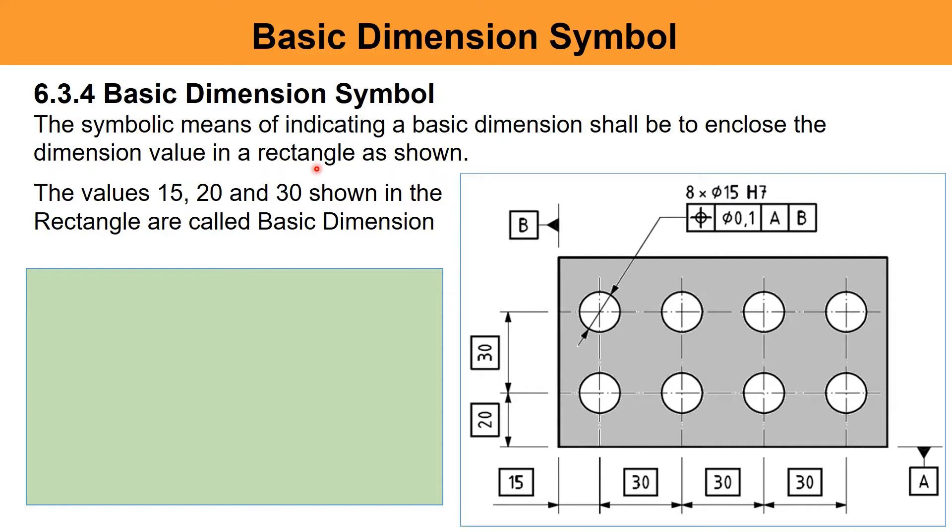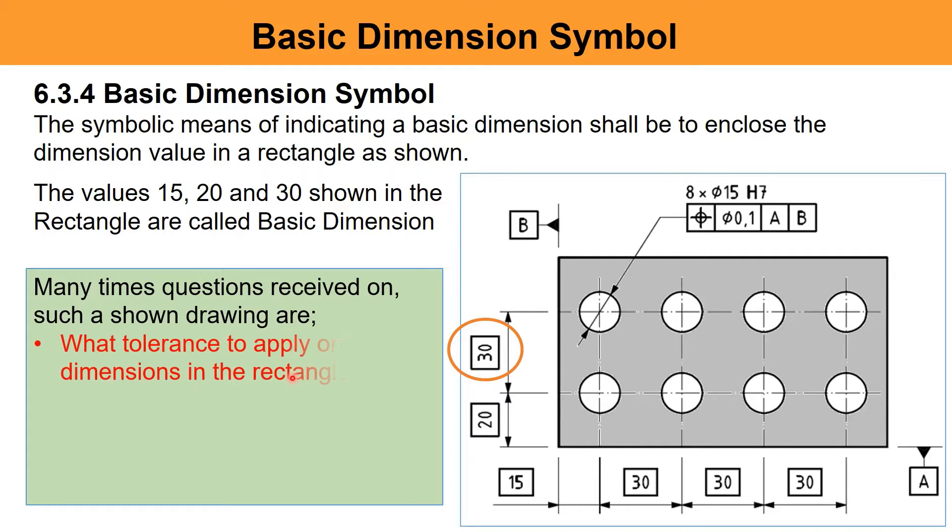How to represent Basic Dimension with a symbol on an engineering drawing. The symbolic means of indicating a basic dimension shall enclose the dimension value in a rectangle as shown. The values 15, 20 and 30 shown in the rectangle are called basic dimensions. Many times, questions received are: what tolerances to apply on the dimensions in the rectangle?